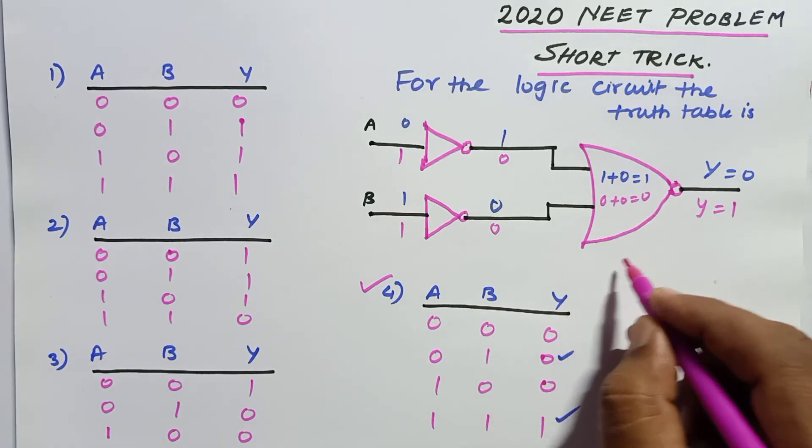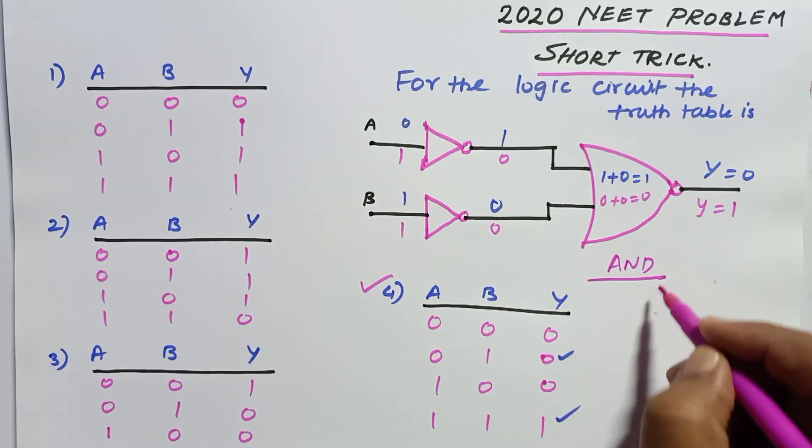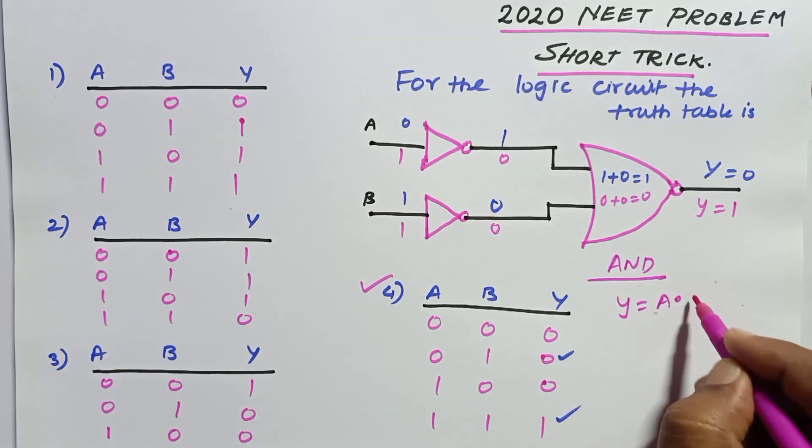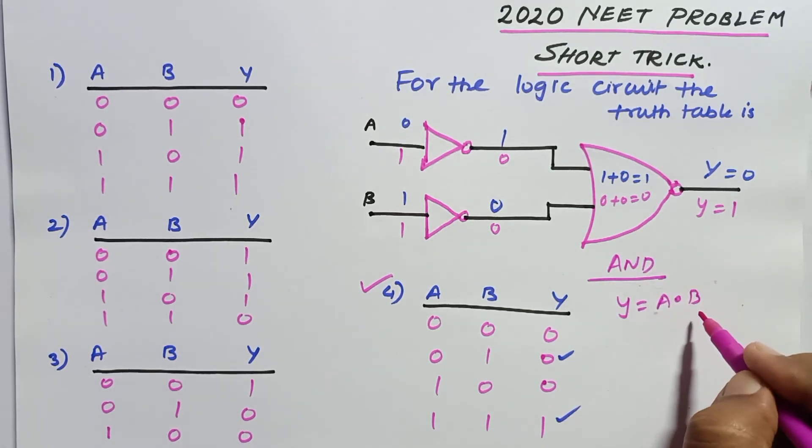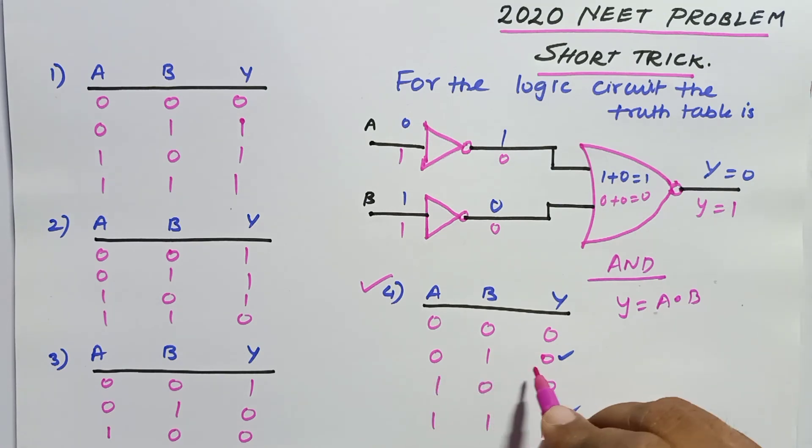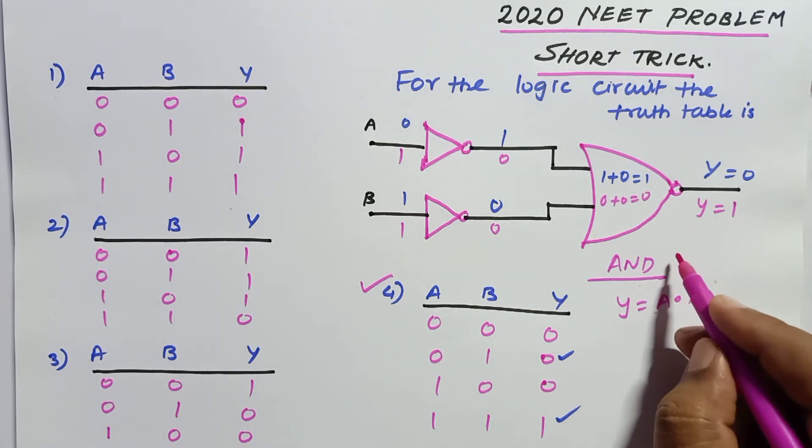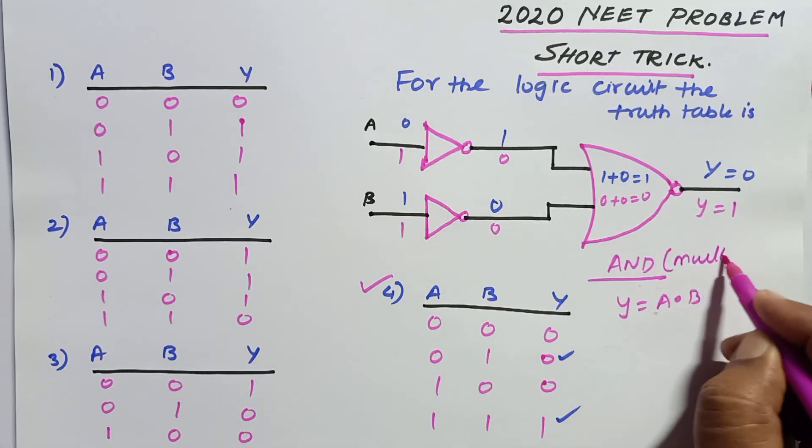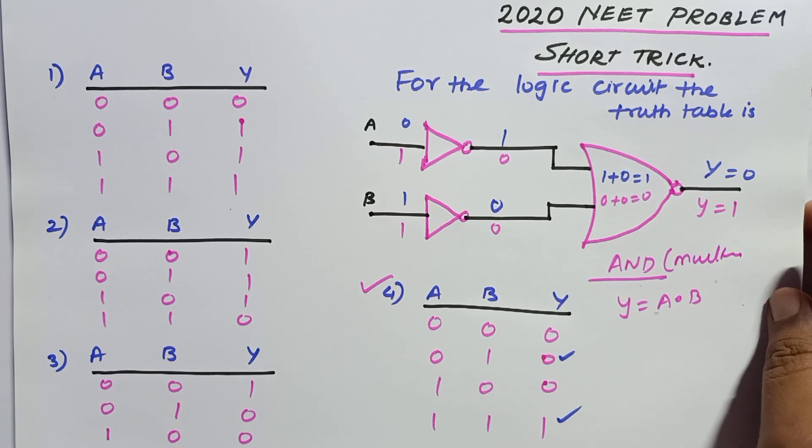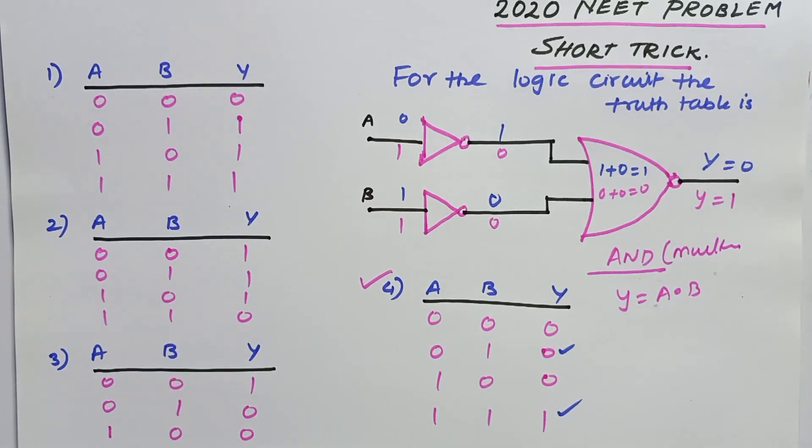What type of gate is this? This is going to give you an AND gate, where Y is going to become A dot B - multiplication of both. 0 into 1 is 0, whereas 1 into 0 is also 0, but 1 into 1 is going to be 1. So this is an AND gate which gives you the multiplication operation. This is the shortcut. Thank you very much for listening.